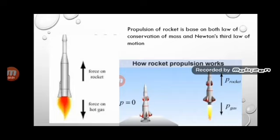Based on Newton's third law, when the fuel burns, gases come out in the downward direction (action), and the rocket experiences upward reaction. Based on the law of conservation of momentum, in the absence of external unbalanced force, total momentum must remain constant. To maintain this, as the rocket moves up, its mass decreases and its velocity increases, so that the total momentum of the rocket is always conserved.